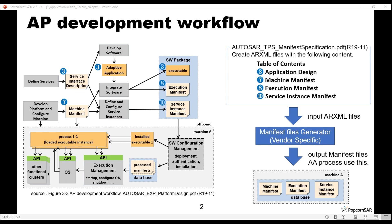In Adaptive Platform, the application consists of libraries and executables on the POSIX OS. The adaptive applications run on the ECU along with ARXML and manifest files.